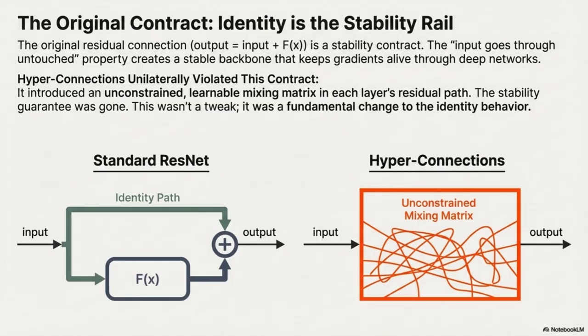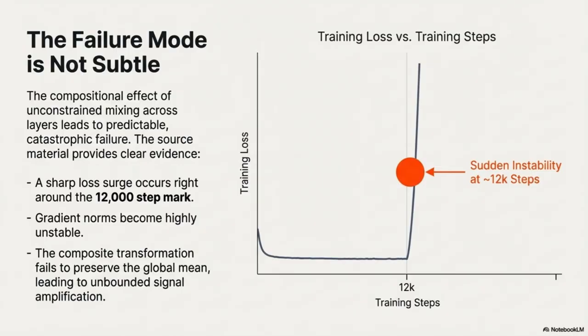The problem is what's called compositional closure. A single one of those mixing matrices looks fine - it's just a linear transformation. But multiply a hundred of them together and the composite transformation fails to preserve basic properties like the global mean. It leads to unbounded amplification or attenuation, resulting in instability, that loss surge, and metrics like the AMAX gain magnitude going off the rails.